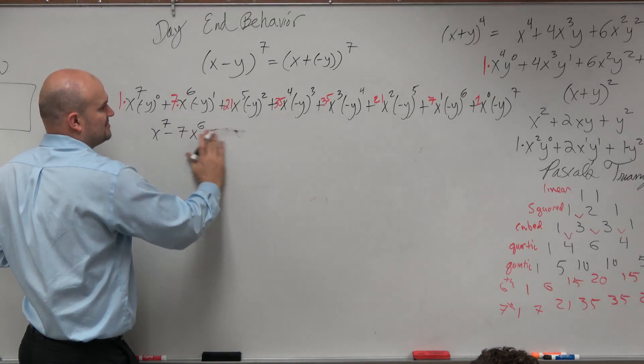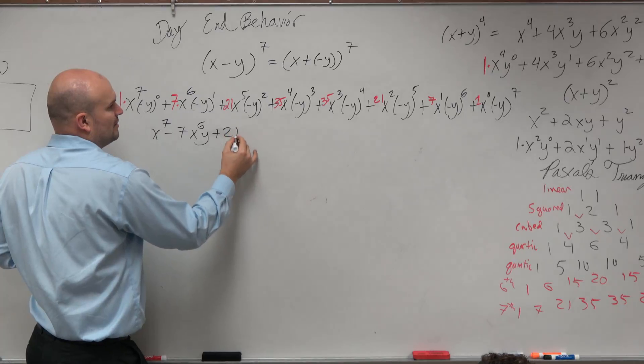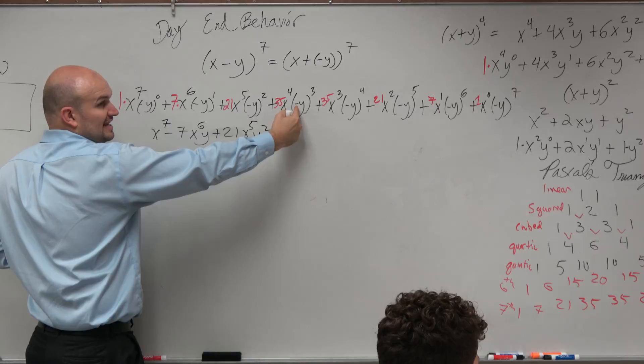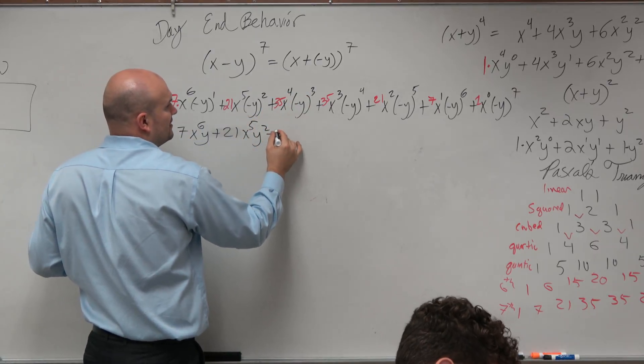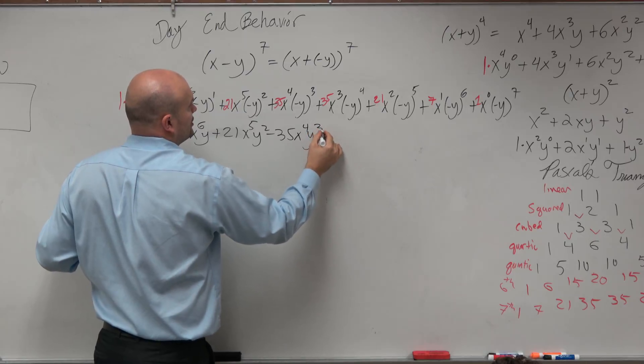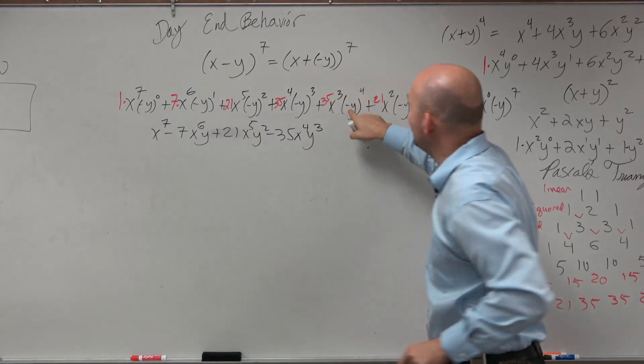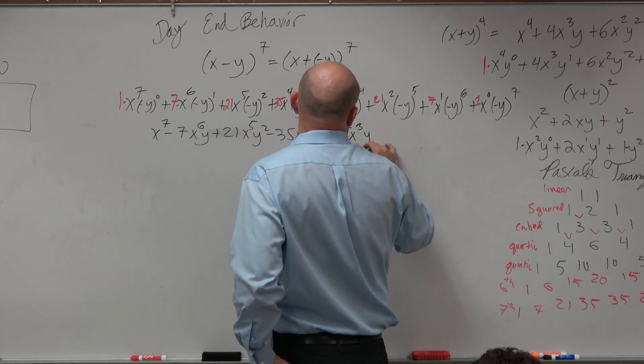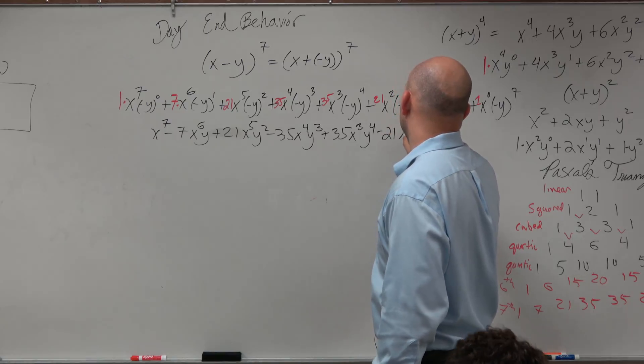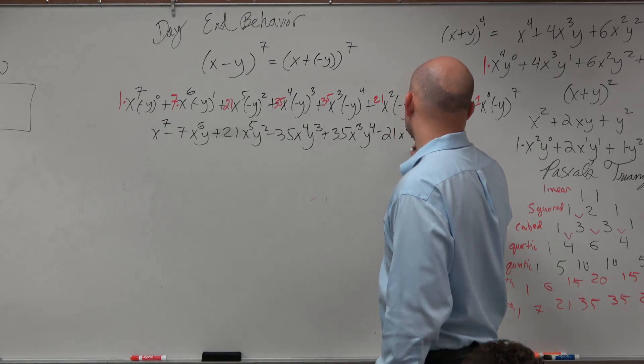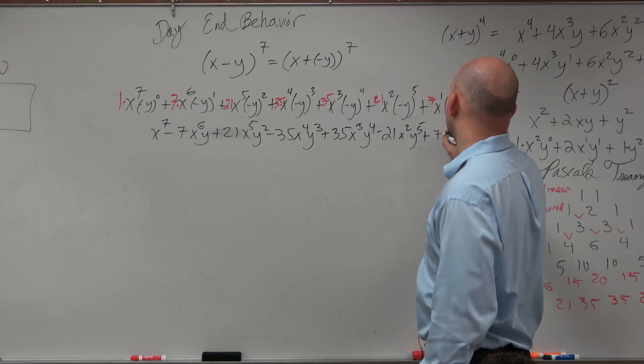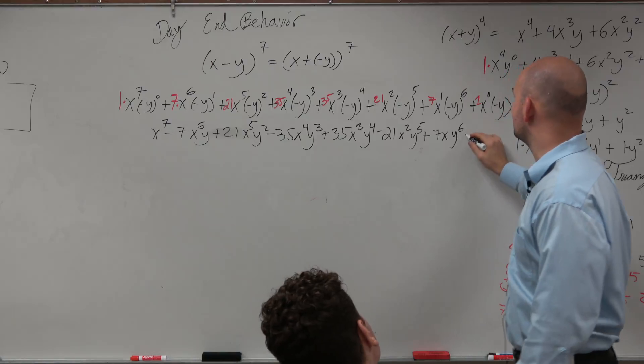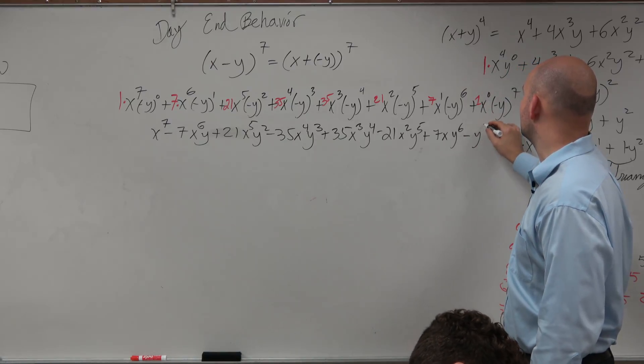Oops, I still had to add the y there. I'm sorry, I forgot about that. Y is still there. Plus 21, positive 21, x to the fifth y squared. This is raised to the odd power, so it's going to turn into a negative. Negative 35 x to the fourth y cubed. Negative to an even power makes it positive. So therefore, it's plus 35 x cubed, y to the fourth. That goes negative, 21, x squared, y to the fifth. That becomes positive, plus 7, x, y to the sixth. And then last and not least, this is negative, negative. That goes to 1, so y to the seventh.